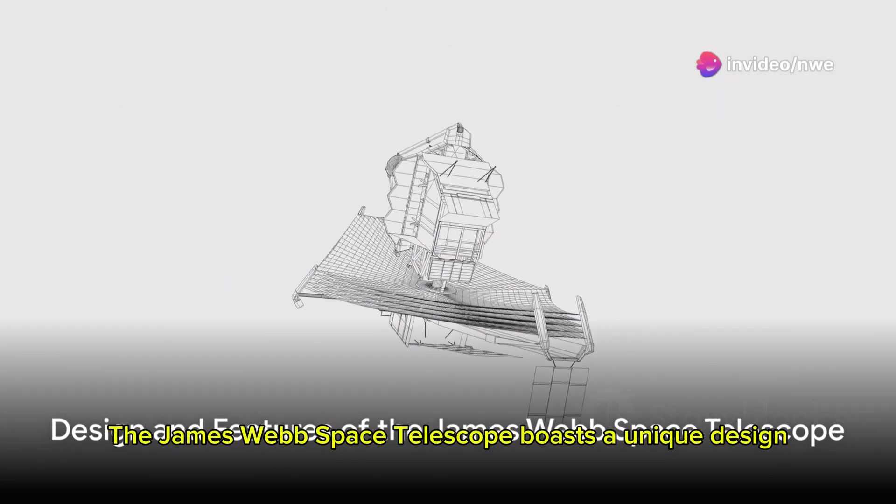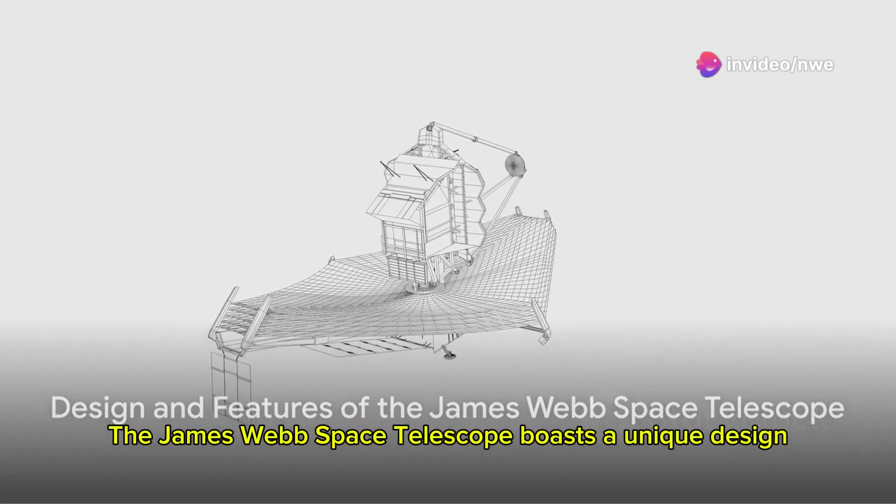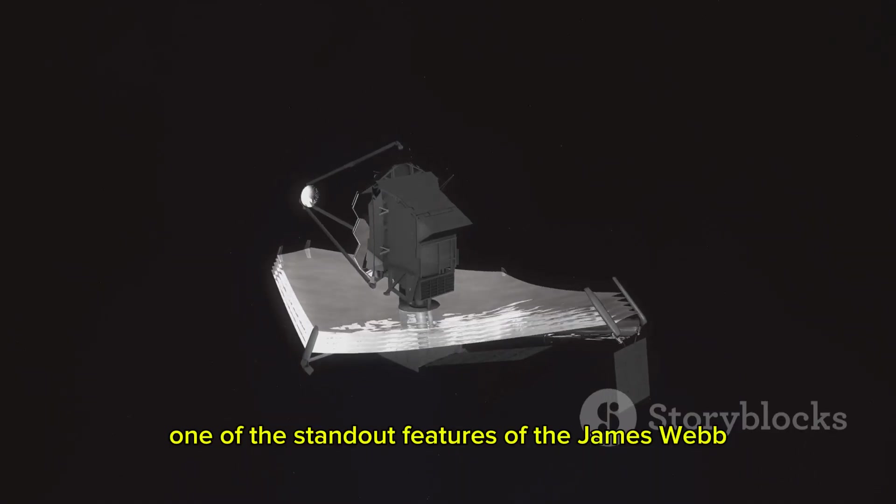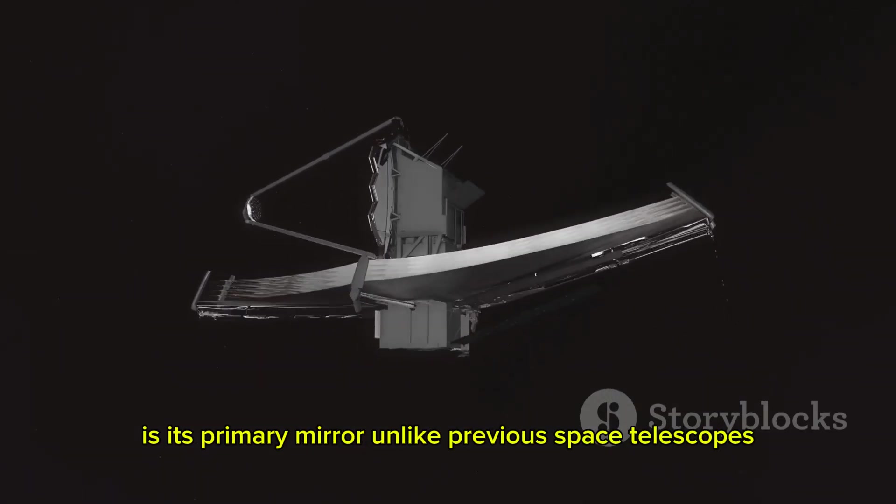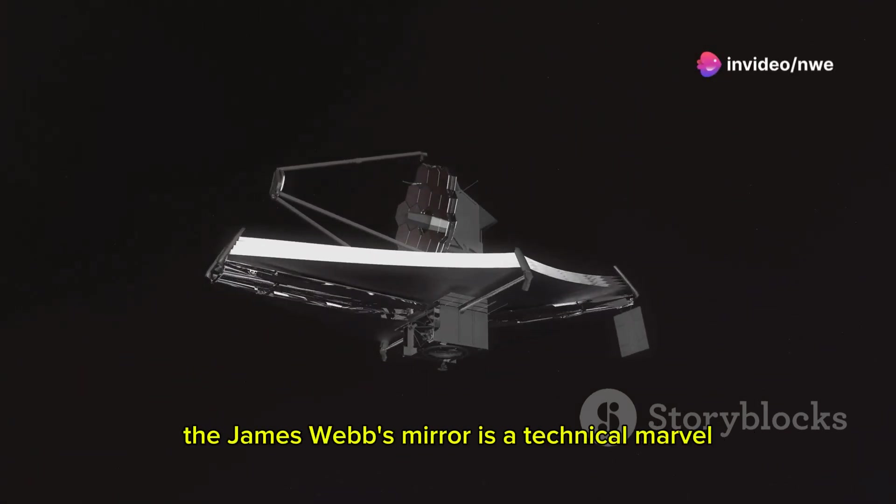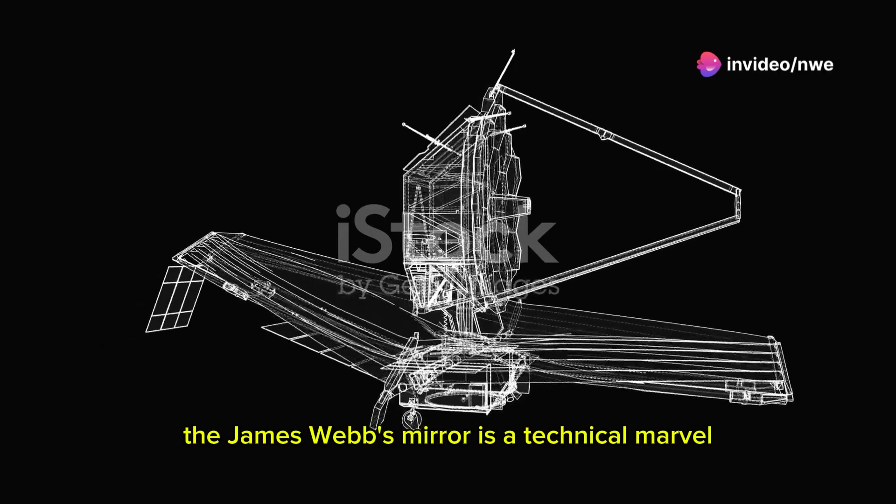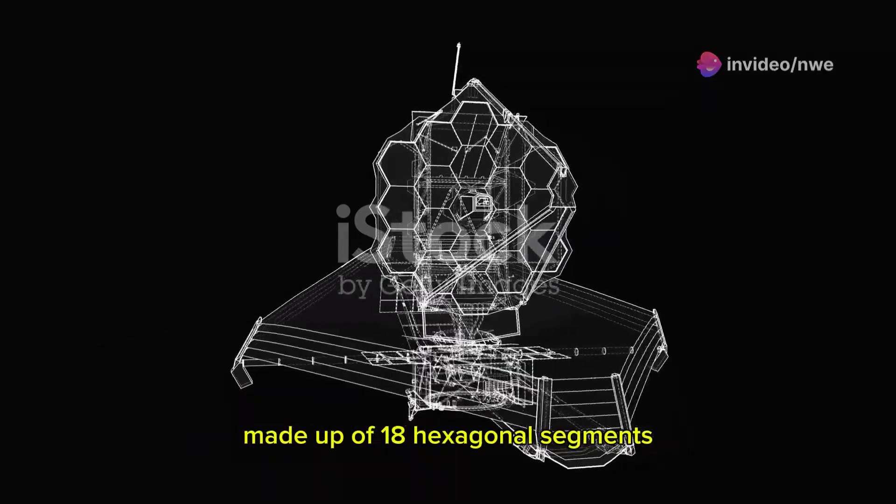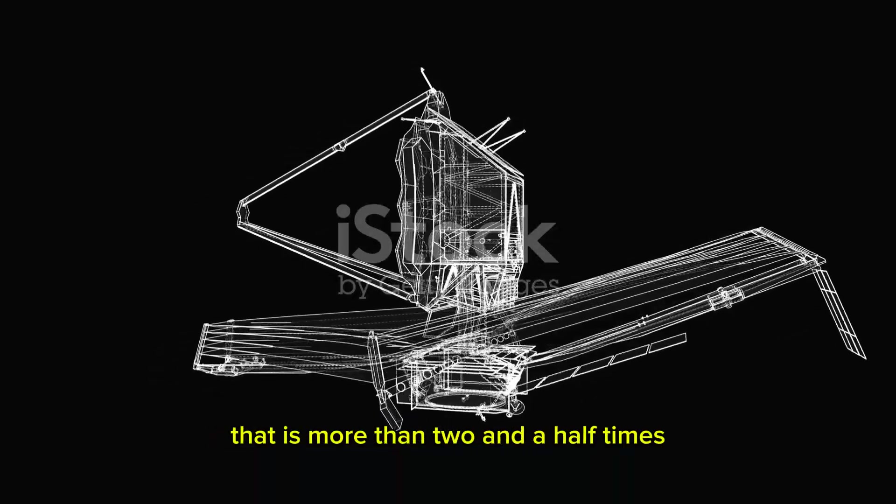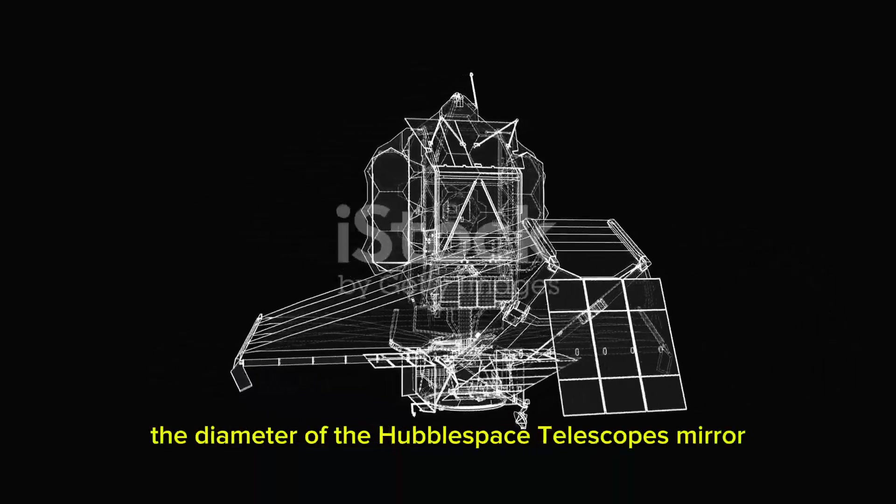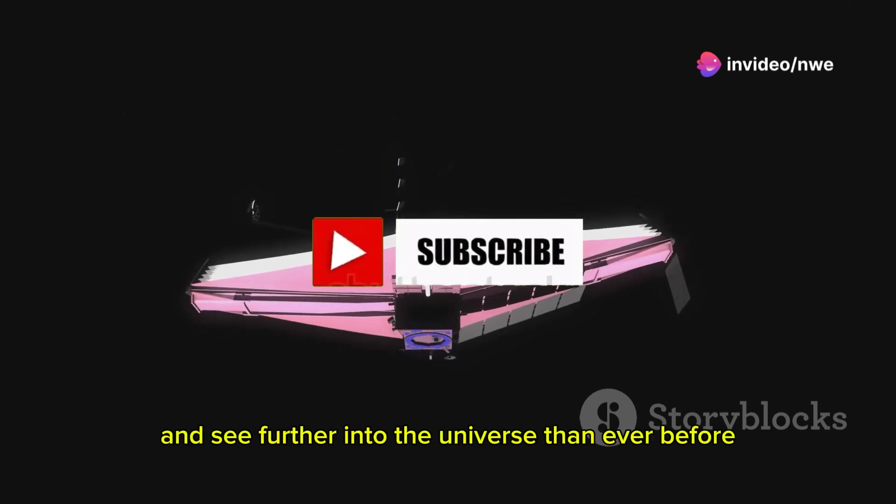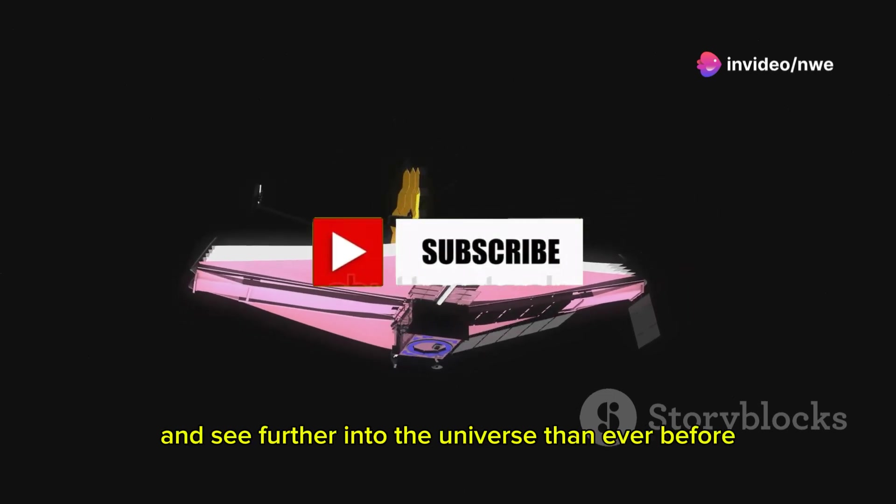The James Webb Space Telescope boasts a unique design and features that set it apart from its predecessors. One of the standout features is its primary mirror. Unlike previous space telescopes that had single-piece mirrors, the James Webb's mirror is a technical marvel made up of 18 hexagonal segments. These segments combine to form a mirror that is more than two and a half times the diameter of the Hubble Space Telescope's mirror. This increased size allows the James Webb to collect more light and see further into the universe than ever before.